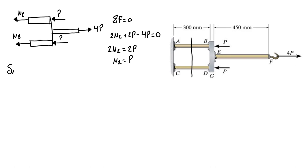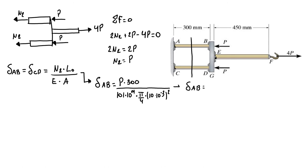The displacement in rod AB is the same as the displacement of rod CD, which equals N2 times original length over modulus of elasticity times area. Our displacement AB equals P times 300 millimeters over 101 times 10 to the 9 Pascals times π over 4 times 10 times 10 to the minus 3 squared. The displacement in AB will be 0.03782 times 10 to the minus 3 P.